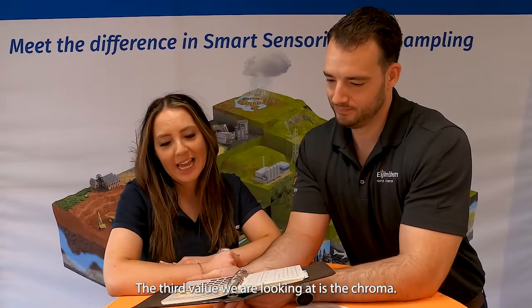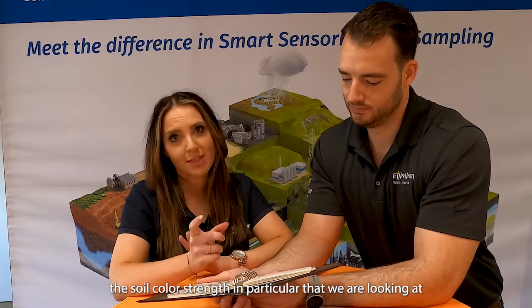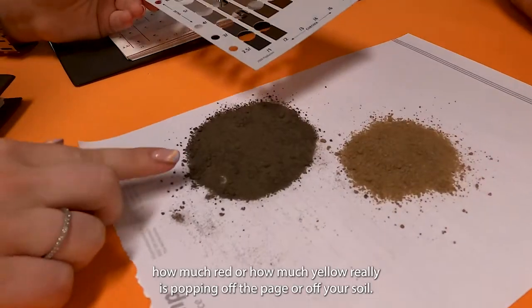The third value we are looking at is the chroma, so this is telling us the soil color strength in particular that we are looking at. How much red or how much yellow really is popping off the page or off your soil type.